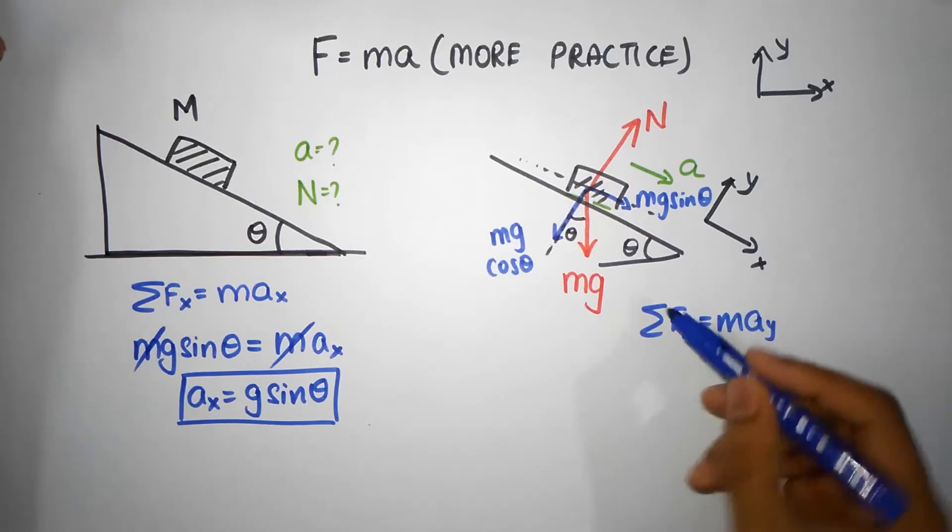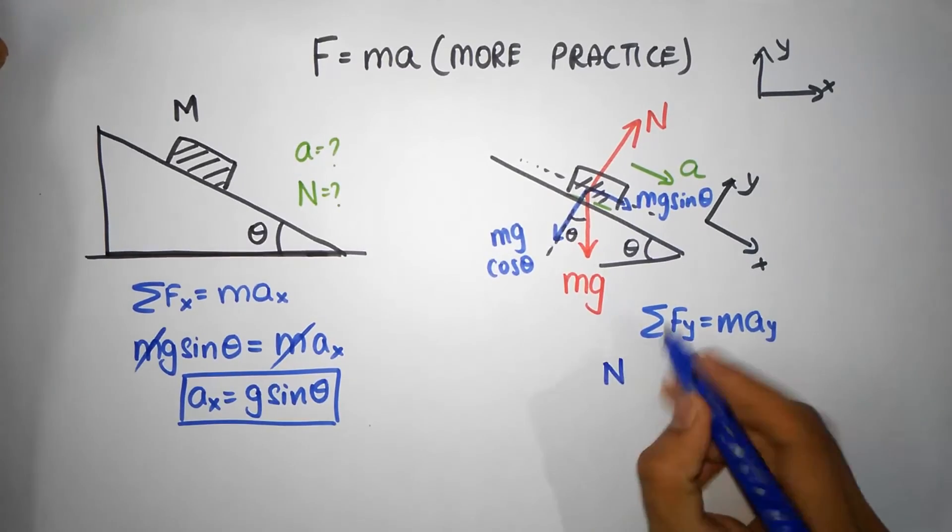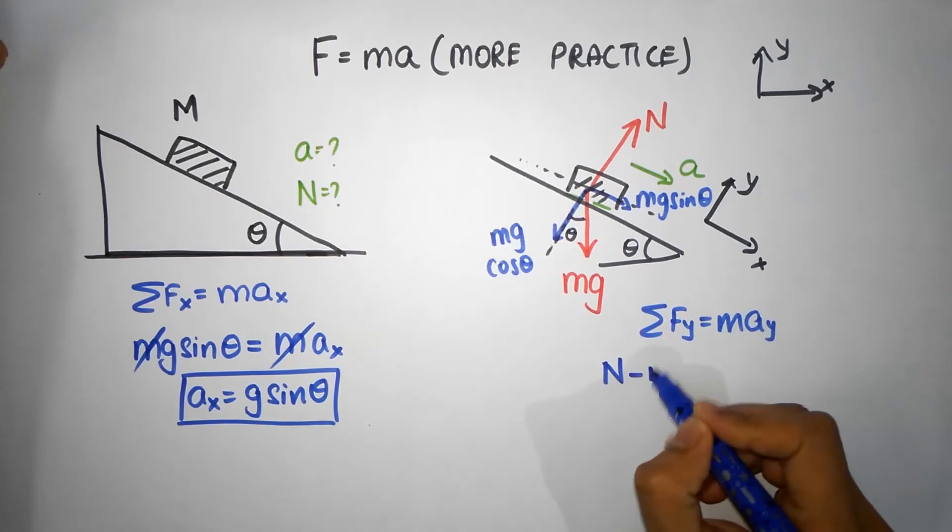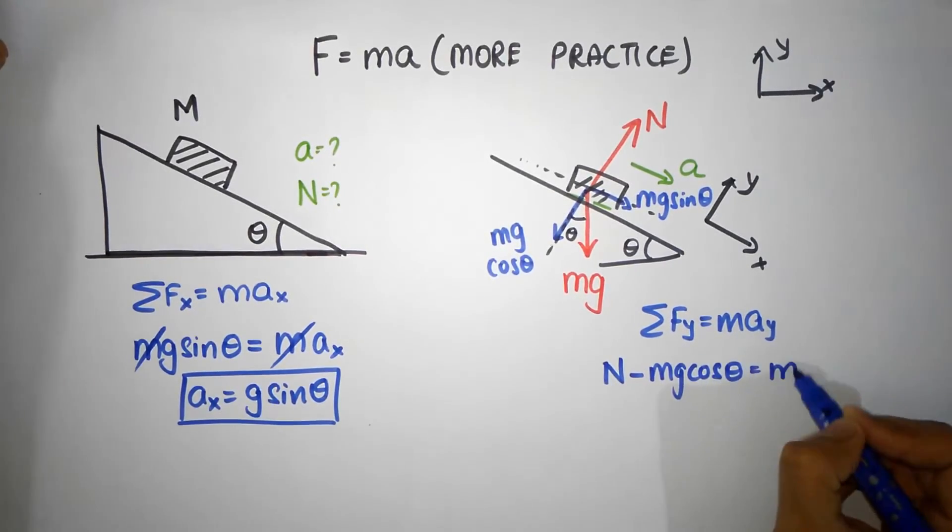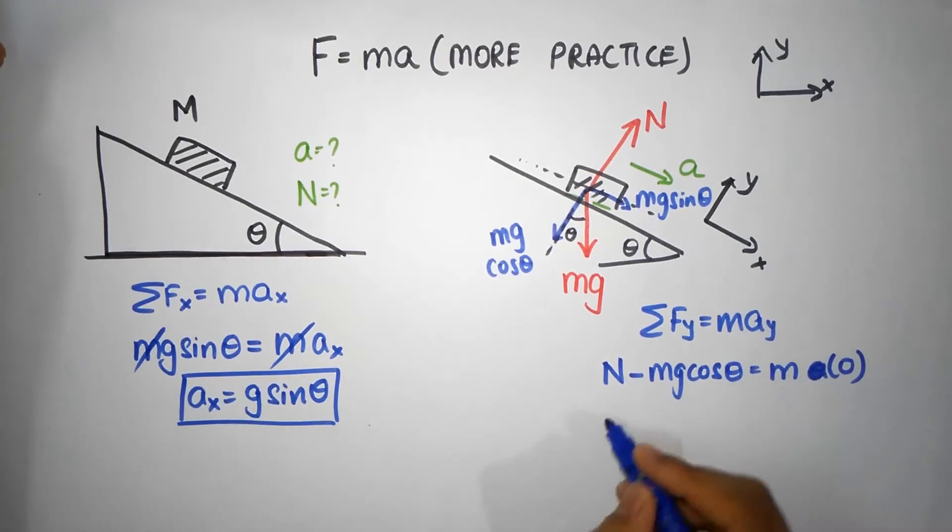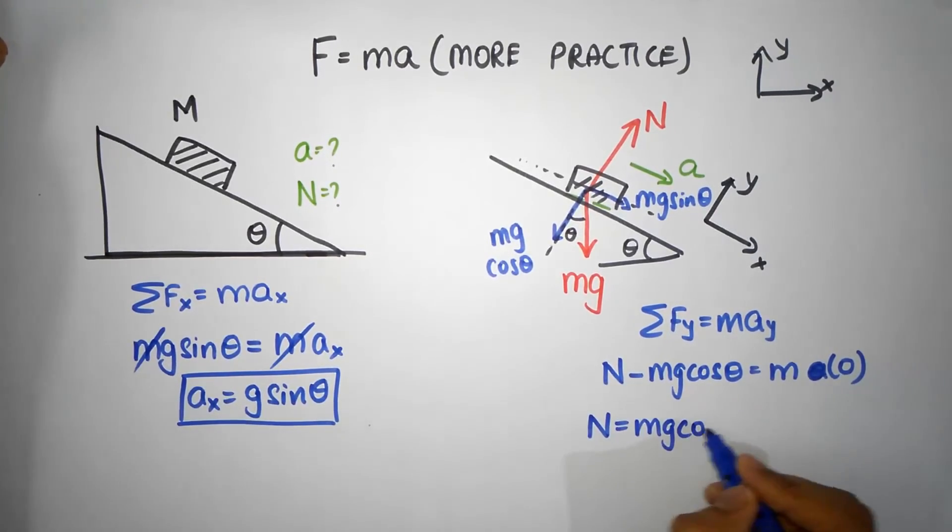All right, so the two forces we have now is normal which is positive along the y-direction, and you have mg cos theta which is negative along the y-direction. You see, it's downward. So minus mg cos theta. It's going to be mass times acceleration, which is zero. I'm sorry, this is zero. So the right hand side is zero. So N equals mg cos theta.